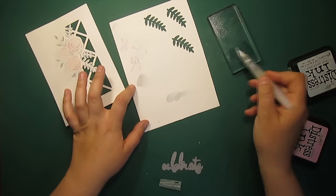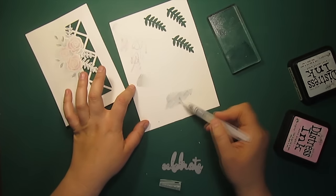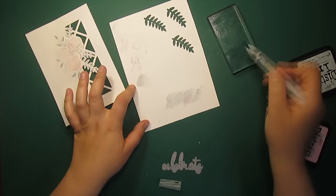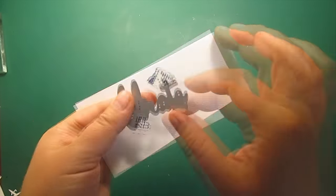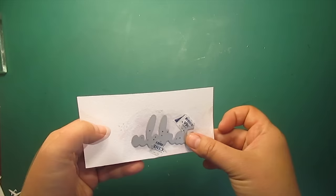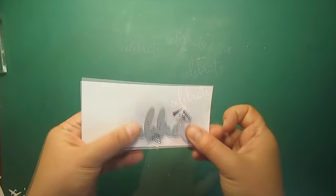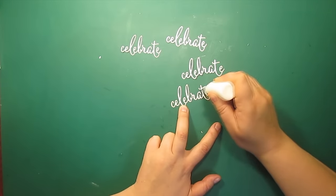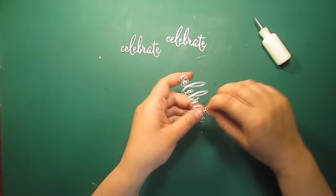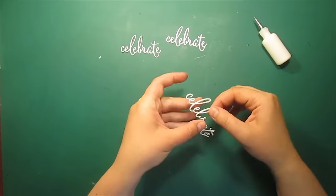For the sentiment I'm coloring the small area with the same inks I used for my image. I'll be cutting out the sentiment four times and then gluing all the pieces one on top of another. The colored die cut is going on top.